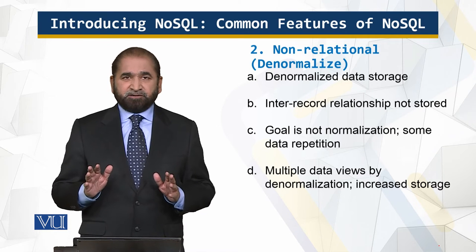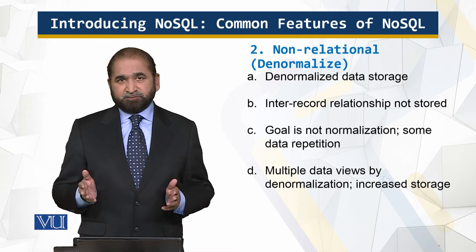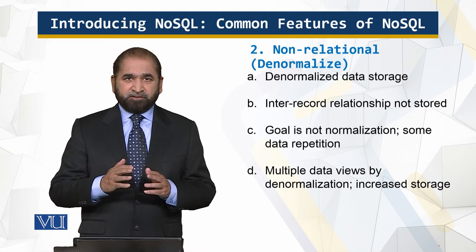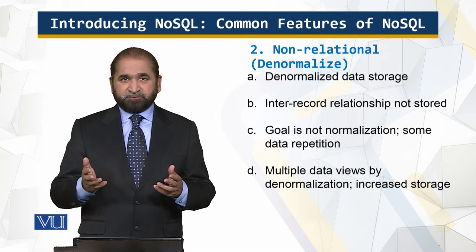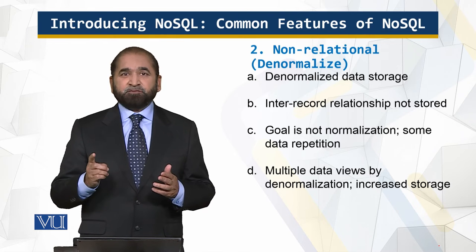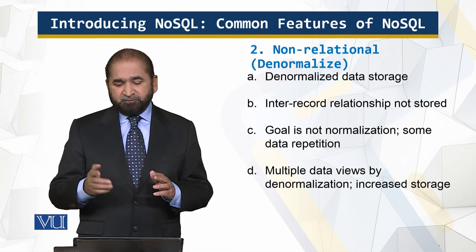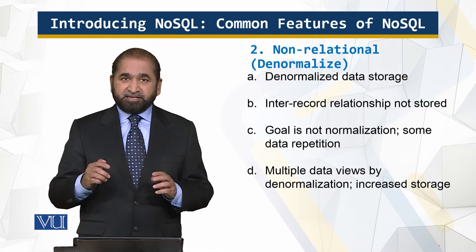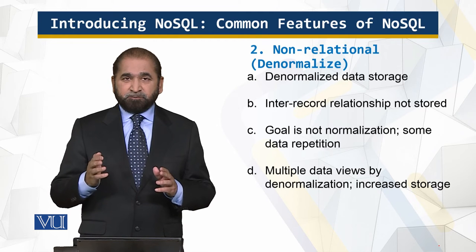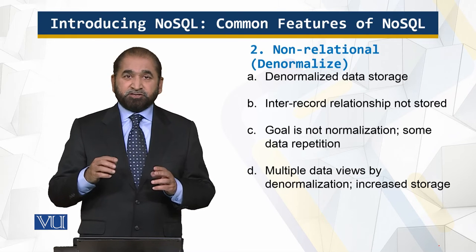NoSQL databases are non-relational. In the classical relational database model, we try to remove duplication from the tables — duplication of data — which results in low maintenance and high performance. But that is for a different type of application. When we say denormalized data storage, it means that the data will be replicated, and this will be done by design. The purpose is to get performance without doing joins.